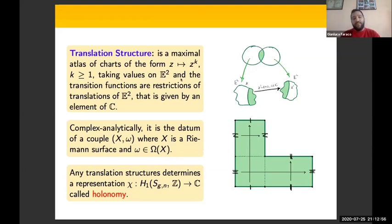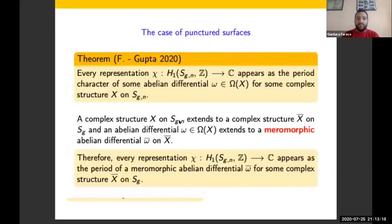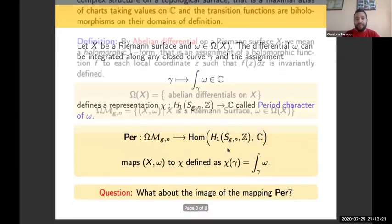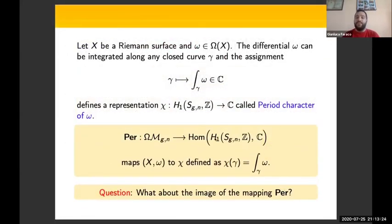A translation structure is a geometric structure, and as such it defines a representation called holonomy. Such a representation encodes data of the geometry. For the specific case of translation structures, what we have is a representation from the first homology group into C. Representations in this space may have a two-fold role: they could appear as the period character of some abelian differential ω, or they could be the holonomy of some translation structure on the surface.